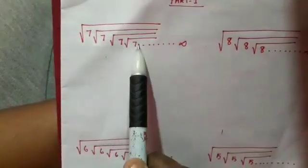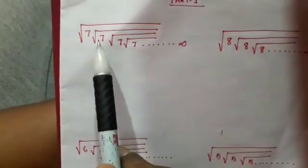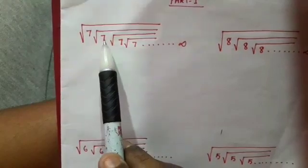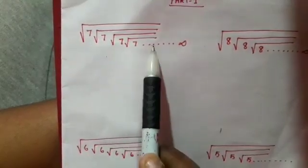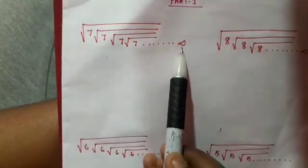We are going to solve the number of roots. That is root 7 into root 7 into root 7 until infinity.